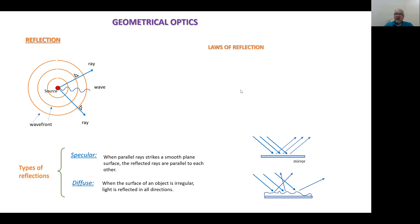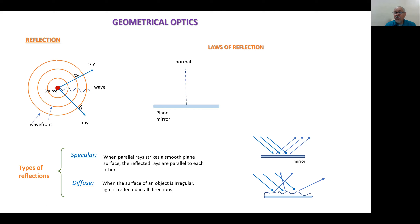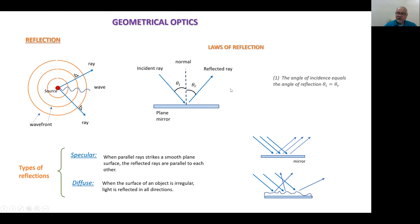Now let's go for the laws of reflection. In this case we have a plane mirror and we have the normal — remember, the normal is perpendicular to the surface. If we have the incident and the reflected ray, it's found that the angles relative to the normal are the same: the incident angle is equal to the reflected angle. That's the first law of reflection.